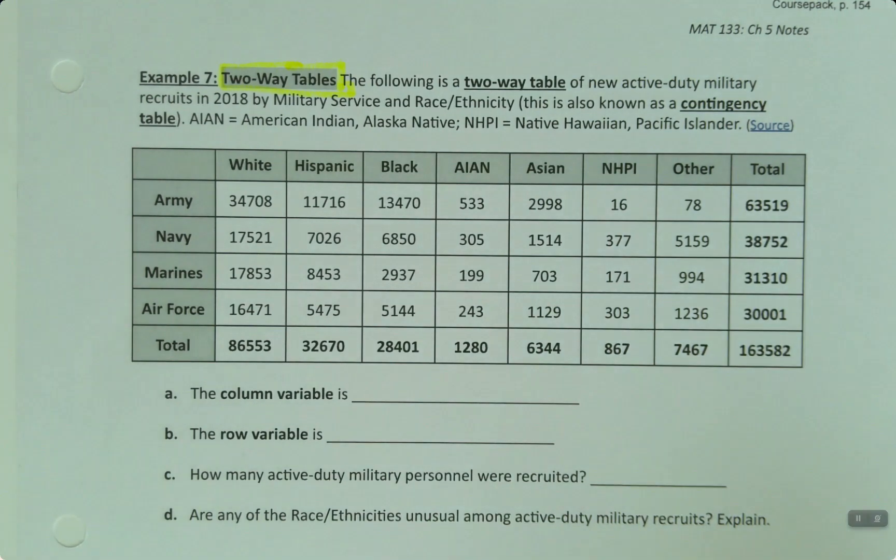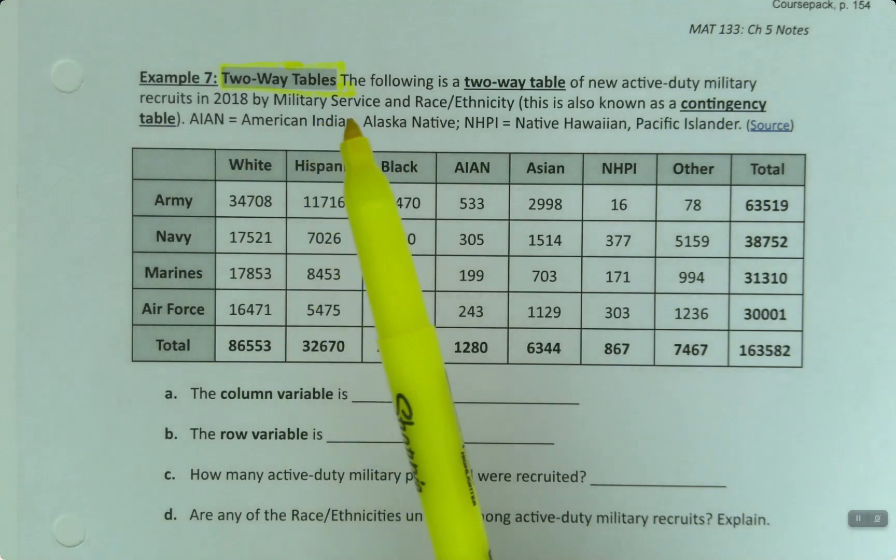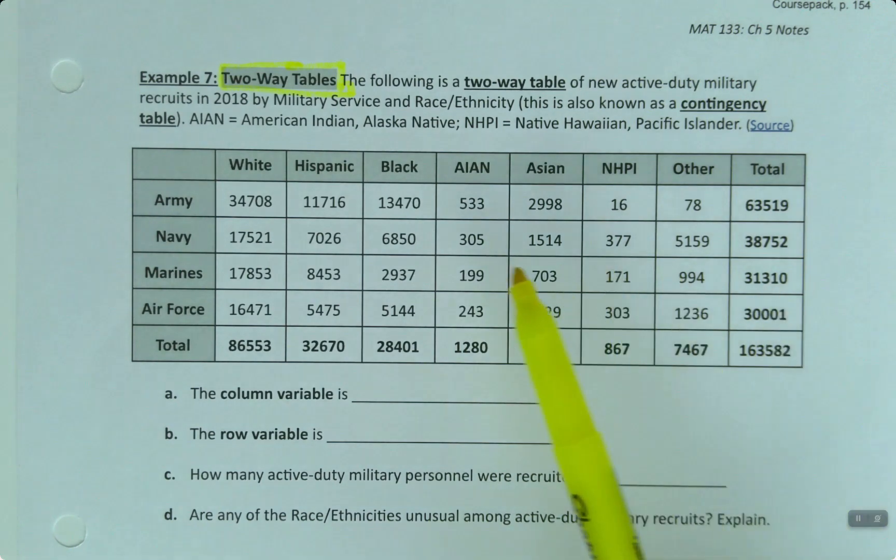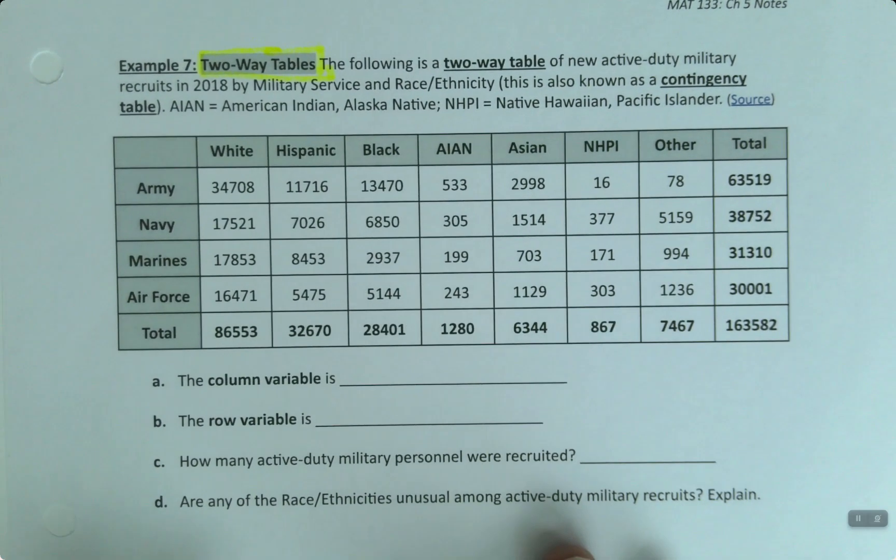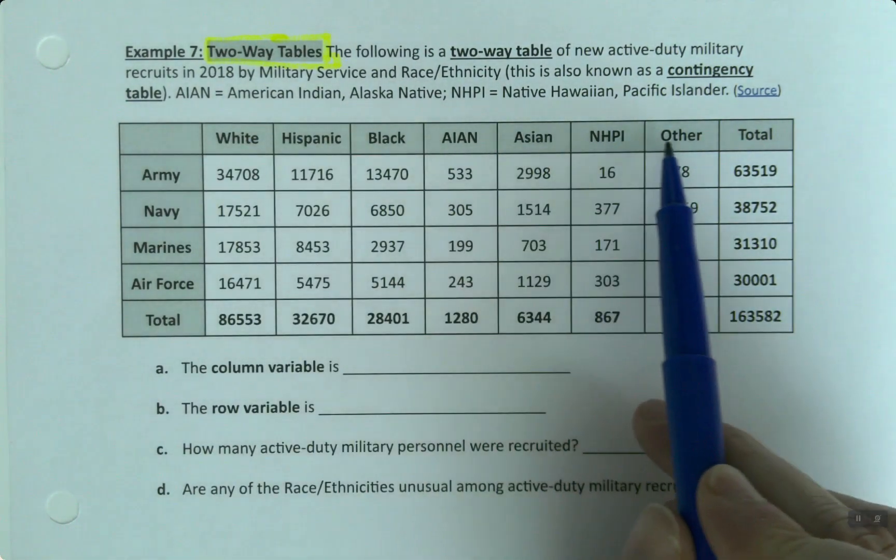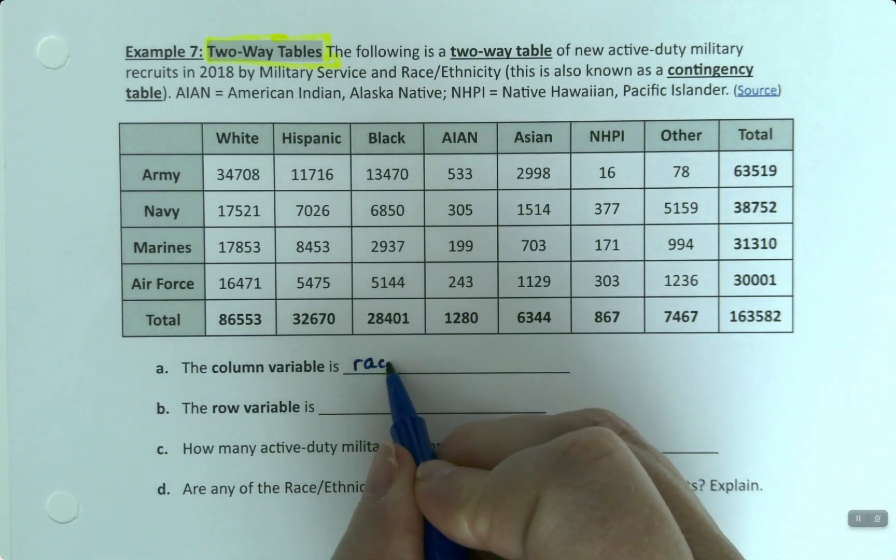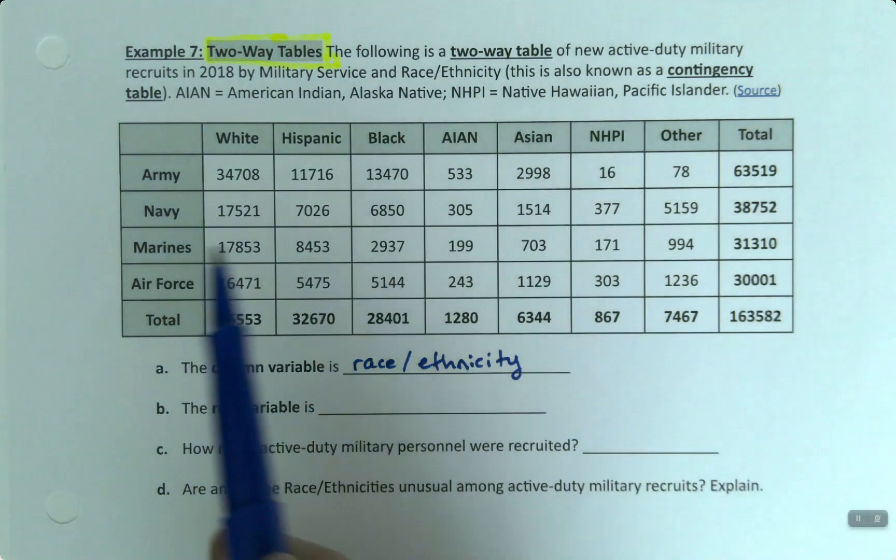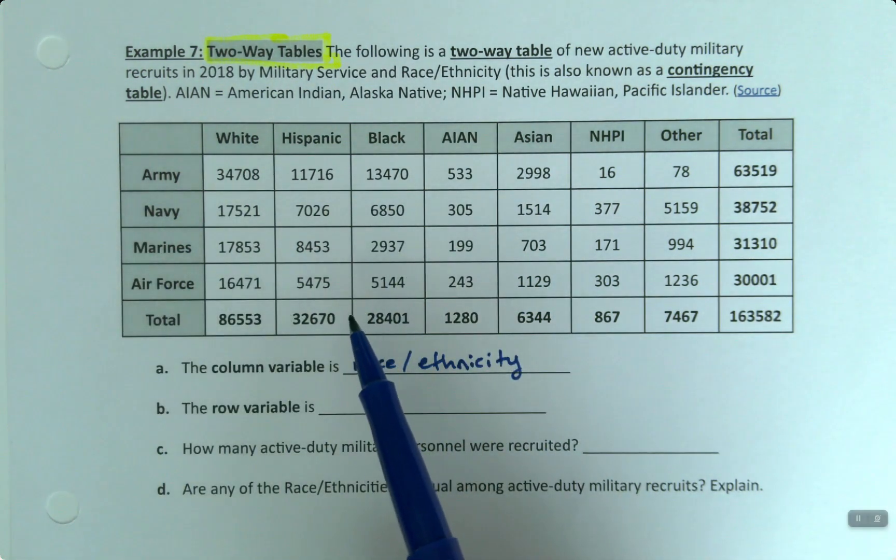And you can see how it's full of real-life statistics. This is the actual active-duty military recruits by military service and race and ethnicity, in any case you're interested. So it's where statistics and probability meet, is in a table like this. So what is the column variable? Well, the columns are the vertical bits. So that would be the races and ethnicities because they are the columns. So race, ethnicity. The row variable is the military service.